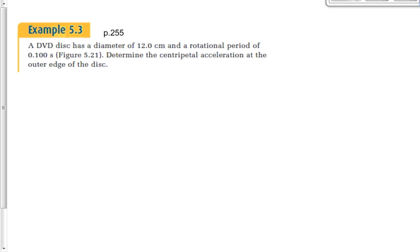I've got an example for you here, before we wrap it up. 5.3 on page 255. A DVD disc. We don't even see DVDs anymore, right? I mean, Blu-rays and downloads. Blu-ray, by the way, has the same diameter as a DVD. I don't know, to be honest, if it spins at the same rate or not. I can get that, but I'm not positive about that. It has a diameter of 12 centimeters. That means the radius of the DVD is 6.0 centimeters. Or, we've got to convert that to meters, 0.0600 meters. It has a period of 0.100 seconds. And we want to find ac.